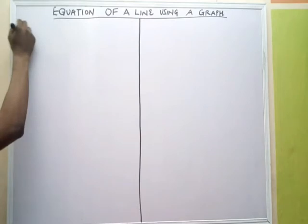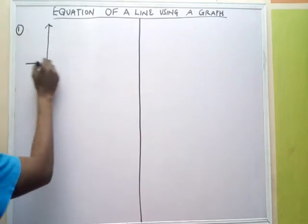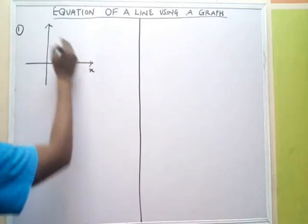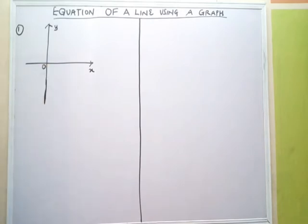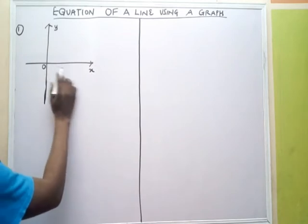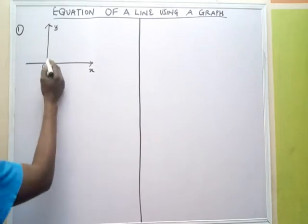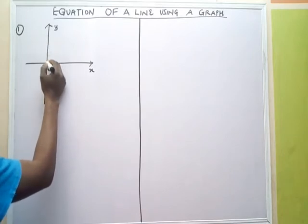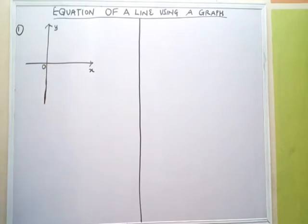Now, today we're going to take some questions. This is the graph — my x and y axis. I have an origin which is 0. On the x axis, values greater than 0 are positive; values less than 0 are negative. On the y axis, values greater than 0 are positive; values less than 0 are negative.